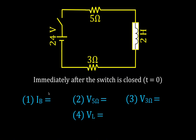When we first close the switch, the current through the circuit is zero because the inductor is resisting the change in current. If the current is zero, then the voltage across the 5-ohm and the voltage across the 3-ohm are also zero. Since we have a 24 volt source and no voltage across the resistors, all of that voltage is across the inductor — the voltage of the inductor equals the voltage of the battery, 24 volts.